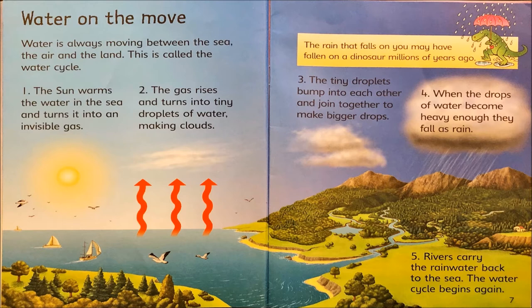How is the water cycle connected to weather? Why does the author want us to learn about the water cycle? Well, water is directly related to the weather. Rain, snow, sleet, and hail are all forms of water that move around the earth.